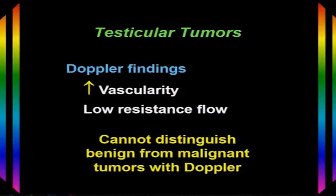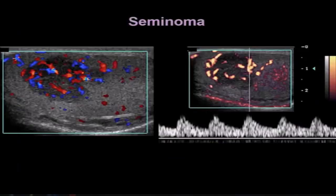Testicular tumors typically have increased vascularity compared to the surrounding testicular parenchyma, and the flow in the vessels is usually low-resistant. Unfortunately, benign tumors also have increased vascularity, so we can't use color Doppler to distinguish benign from malignant tumors.